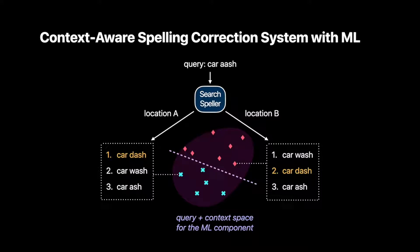Here's a synthetic example where the input query is 'car-ash.' Speller is supposed to return different spell corrections ranked according to location context, because the same query might originate from different locations. If car-ash is a business name in a city where location A resides, we expect it to be ranked first. Whereas at location B, outside that city, we expect 'car-wash,' a common category, to be the top suggestion. This complex behavior is driven by a ML ranking system, and such ML systems can make software testing tricky.